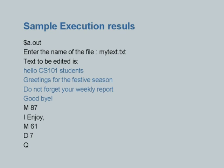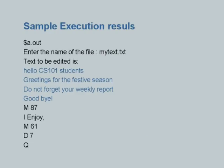Here is a sample run. Enter the name of the file — I have entered some sample text in mytext.txt. The text to be edited is: 'Hello CS101 students. Greetings for the festive season. Do not forget your weekly report. Goodbye.' The editing commands move the cursor to position 87 and insert 'enjoy', then move cursor to position 61 and delete 7 characters. This comes just before 'goodbye', producing the final edited message.